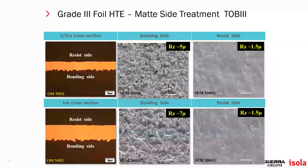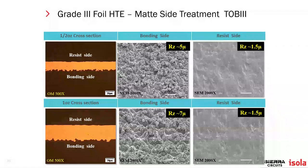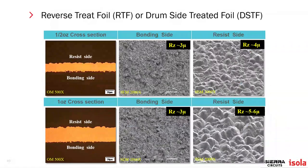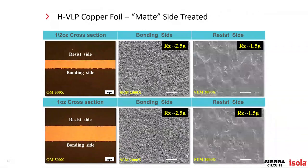Some images here give an idea of the HTE standard RTF type foil and then an HVLP foil with standard roughness. Images of the newest generation foils are not yet included in this presentation.